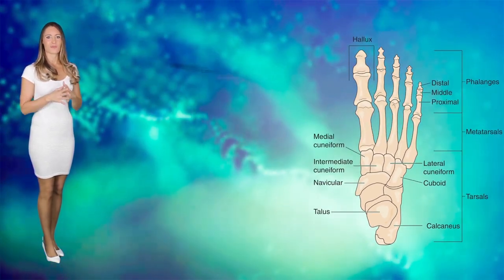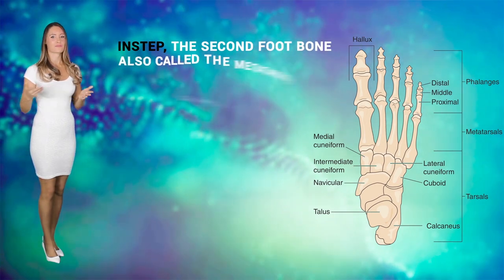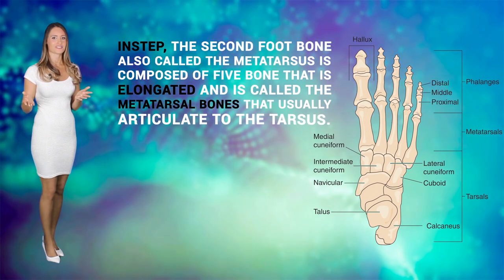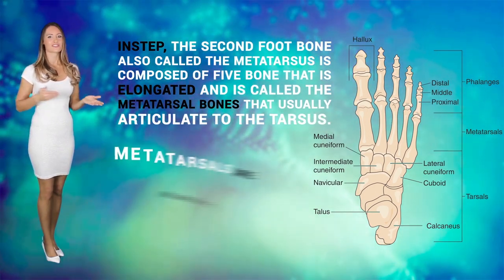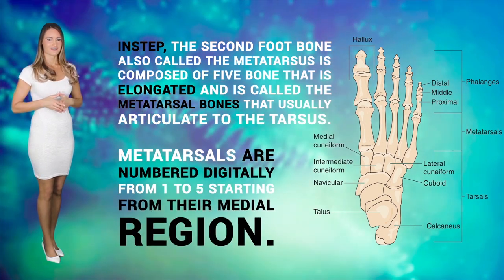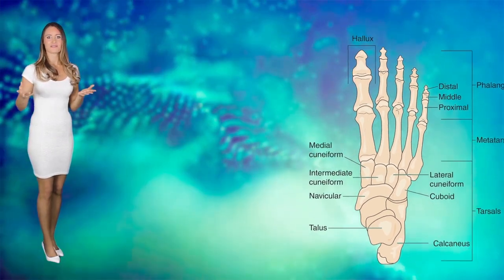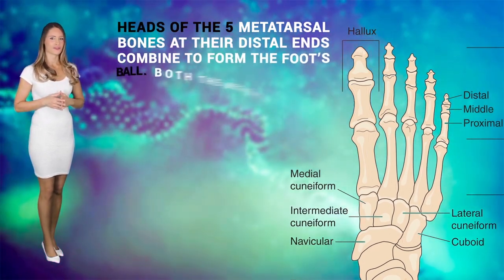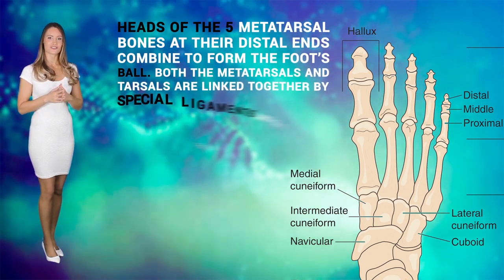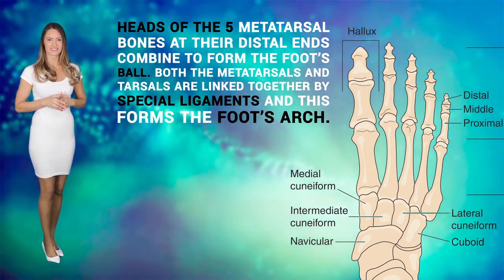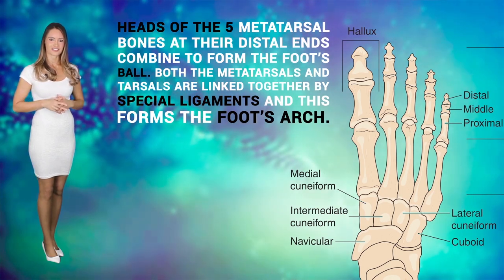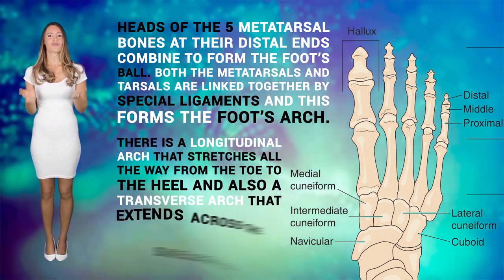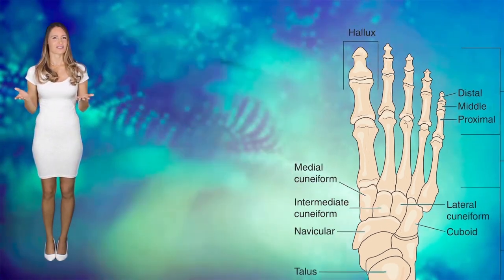The instep, the second foot bone, also called the metatarsus, is composed of five elongated bones called the metatarsal bones that articulate with the tarsus. Metatarsals are numbered digitally from one to five, starting from their medial region. The heads of the five metatarsal bones at their distal ends combine to form the foot's ball. Both the metatarsals and the tarsals are linked together by special ligaments, forming the foot's arch. There is a longitudinal arc that stretches from the toe to the heel, and also a transverse arc that extends across the skeletal foot.